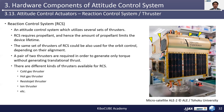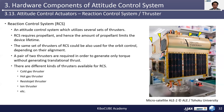The next one I introduce is the Reaction Control System, or RCS. RCS is an attitude control system which utilizes several sets of thrusters. RCS requires a propellant, and hence the amount of propellant limits the device lifetime. The same set of thrusters of RCS could also be used for controlling orbit depending on their alignment. A pair of two thrusters are required in order to generate only torque without generating translational thrust. This picture is an example of microsatellite AL2, which was implemented with four RCS thrusters. There are different kinds of thrusters available for RCS, such as cold gas thrusters, hot gas thrusters, resistojet thrusters, ion thrusters, etc.